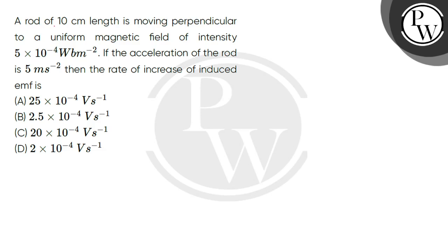Let's read the question. A rod of 10 cm length is moving perpendicular to a uniform magnetic field of intensity 5 × 10^-4 Weber per meter square.